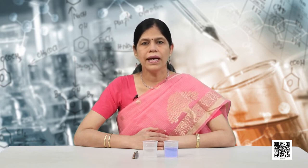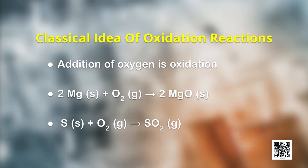Originally, the term oxidation was used to describe the addition of oxygen to an element or a compound. Because of the presence of dioxygen in the atmosphere, which is roughly about 20 percent, many elements combine with it, and this is the principal reason why they commonly occur on the earth in the form of their oxides. The elements magnesium and sulphur are oxidized on account of addition of oxygen to them and get converted to magnesium oxide and sulphur dioxide respectively.